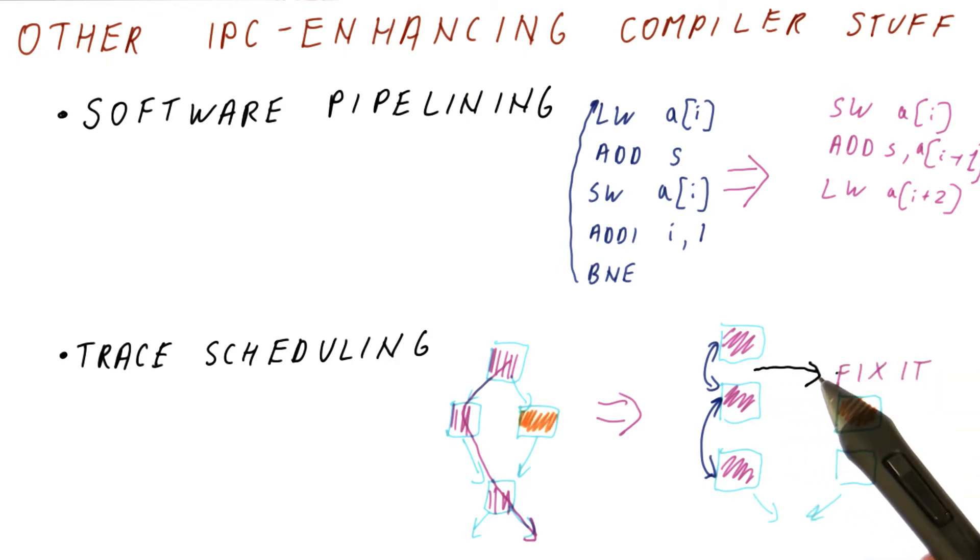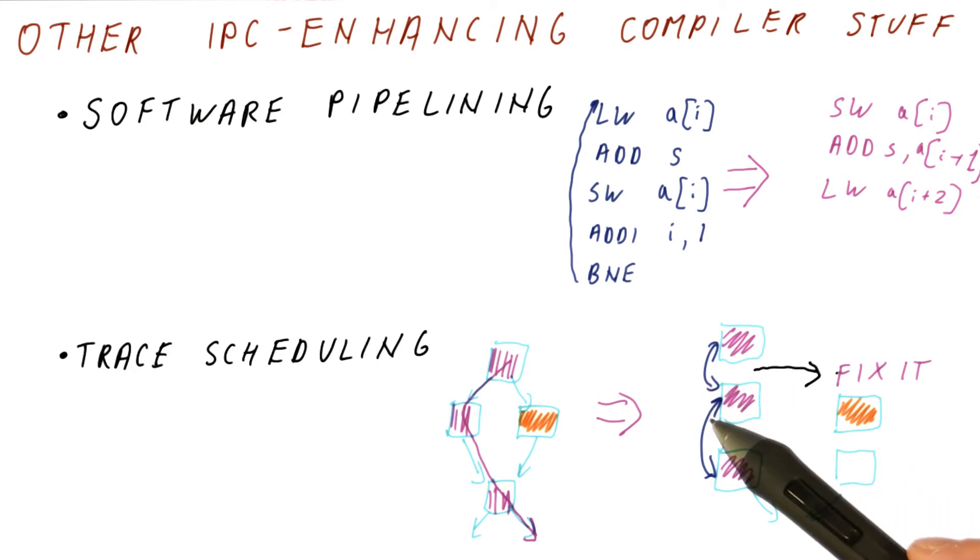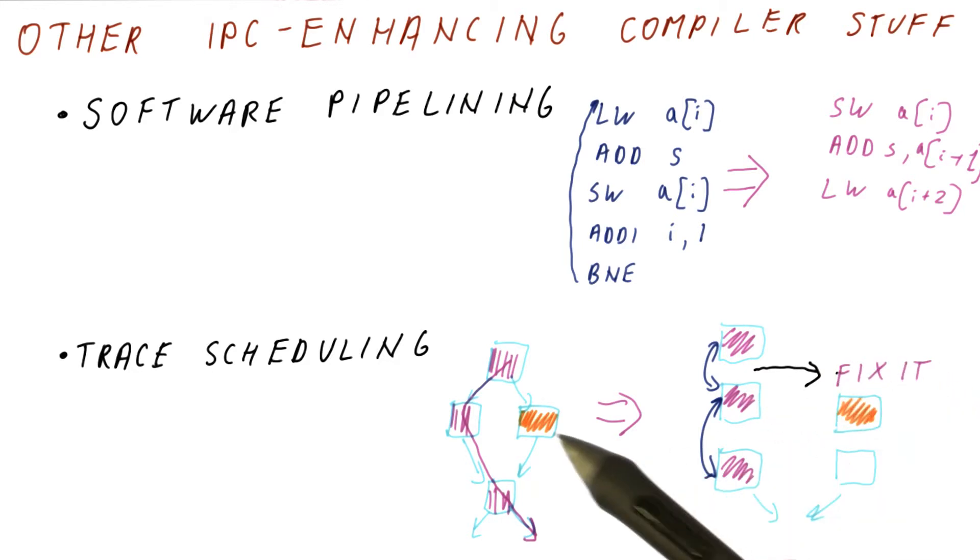And at the point when we are branching out, because we have intermixed these instructions, we first have to fix it. Basically, undo the effects of instructions that we shouldn't have done. So the compiler needs to create some code that compensates for that. Then we can execute this block that should have executed,